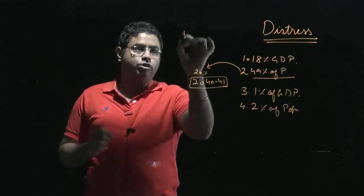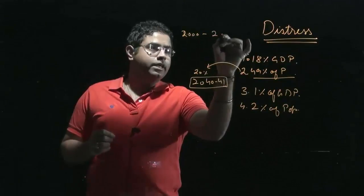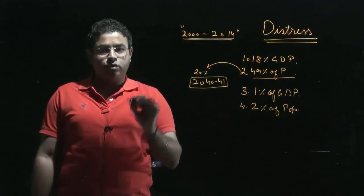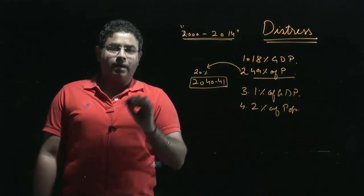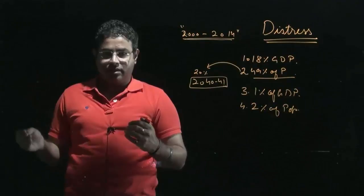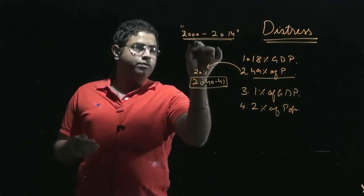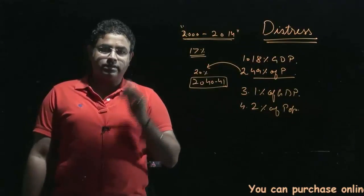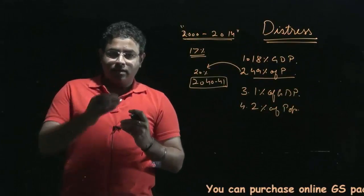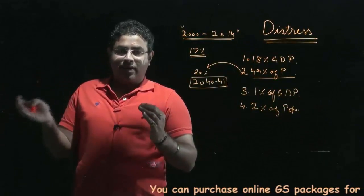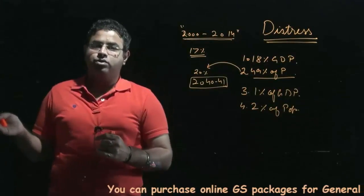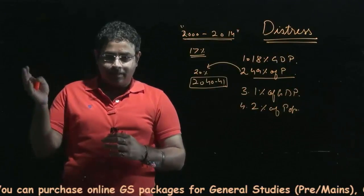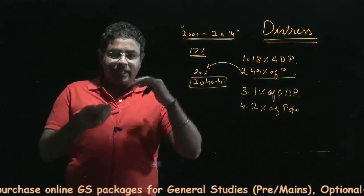If we analyze the growth of the Indian economy from 2000 to 2014, most of the growth has come from sectors that have no relationship with agriculture. As far as agriculture is concerned, from 2000 to 2014, agriculture contributed just 17% of the total GDP growth. The rest — 83% of the contribution — has been either from the service sector or from the secondary sector, that is the manufacturing sector. Those sectors grew a lot while our agriculture sector did not grow.